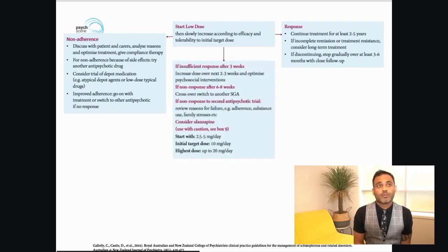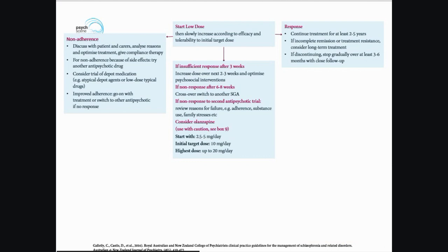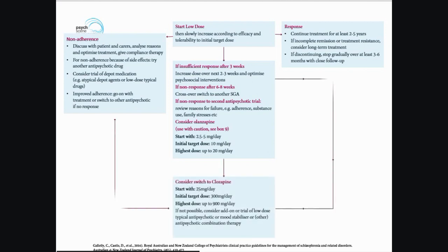If there is insufficient response after three weeks, increase the dose over the next two to three weeks and optimize psychosocial interventions. If there is non-response after six to eight weeks, consider a switch to another second-generation antipsychotic. If non-response to a second antipsychotic trial, consider olanzapine. If still non-responsive, this would fulfill criteria for treatment-resistant psychosis, and we know clozapine has the best evidence in treatment-resistant schizophrenia. In that case, follow the clozapine protocol.